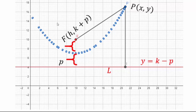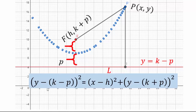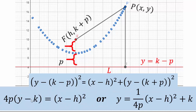Instead of working with square roots, we square both sides: (y−(k−p))² = (x−h)² + (y−(k+p))². Opening the brackets and simplifying gives 4p(y−k) = (x−h)². Comparing this to the vertex form x minus h squared times a constant plus k, we see that the coefficient a equals 1/(4p). So the focus and directrix information was already hidden in the vertex form of the parabolic equation.